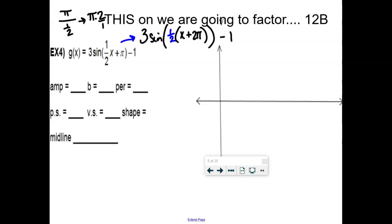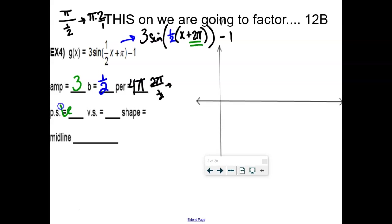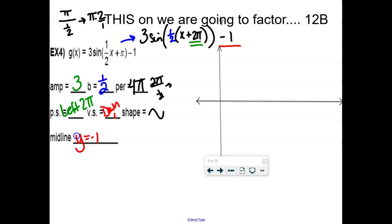The B value is clearly one-half. The amplitude is 3. The period is 2π divided by one-half, which equals 4π — very nice for quarter points. The phase shift, now visible, is left 2π. Vertical shift is down 1. Shape is sine, and the midline because it was shifted down 1 is at y equals negative 1.